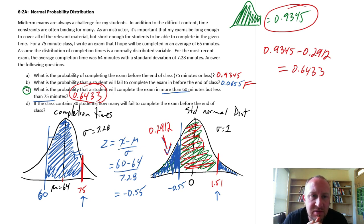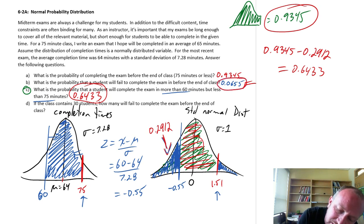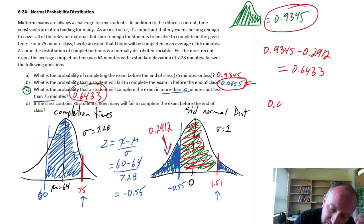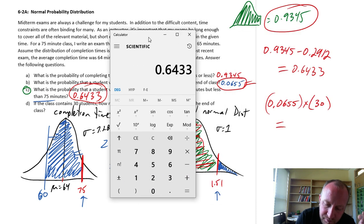If the class has 30 students, how many will fail to complete the exam before the end of class? Well, here we have that probability that any one student fails to complete before the end of class. So the answer to part D is simply 0.0655 times 30 students, and this gives us 0.0655, the probability that any one student fails to finish on time, times 30 students, 1.965.